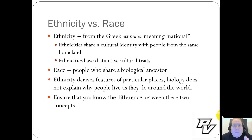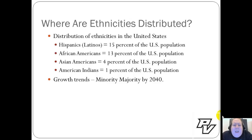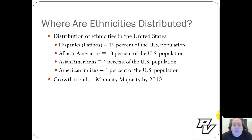In this chapter we'll start by looking at the United States and the distribution of ethnicities within it. Approximately 15% of the US population is Hispanic or Latino — Latino being the more ethnically correct term. African Americans or blacks make up 13% of the US population, Asian Americans 4%, and American Indians about 1% — so about a total of one-third of the current US population.